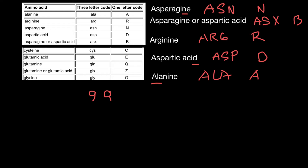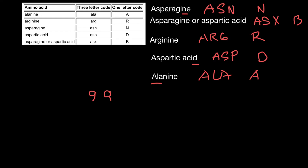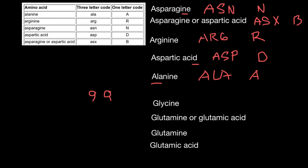Now it's time to hide the table and try to recall all the amino acids we learned today. Let's start with glycine — the most simple amino acid. Three-letter abbreviation is GLY, and one-letter abbreviation is G. That was easy. Now for glutamine or glutamic acid combined: the first letters in the three-letter code are GL, and the last is X because we're not sure which one it is — so GLX. And one-letter code is Z, because XYZ.